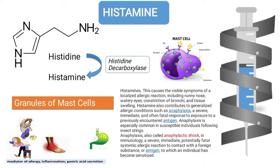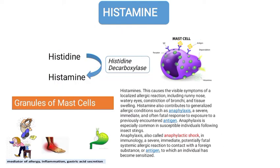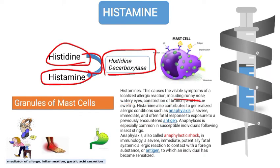Histamine is an organic nitrogenous compound involved in local immune responses. Its structural formula is C5H9N3. Histidine is converted into histamine by the histidine decarboxylase enzyme. Histamine causes visible symptoms of localized allergic reactions including running nose, watery eyes, constriction of bronchi, and tissue swelling. Histamine also contributes to generalized allergy conditions such as anaphylaxis — a severe, immediate, and often fatal response to a previously encountered antigen, especially common in susceptible individuals following insect stings.